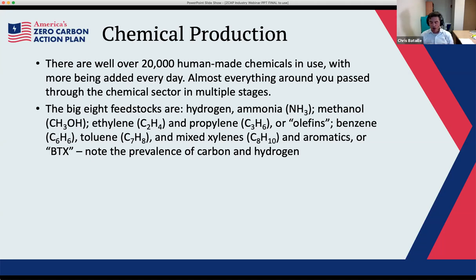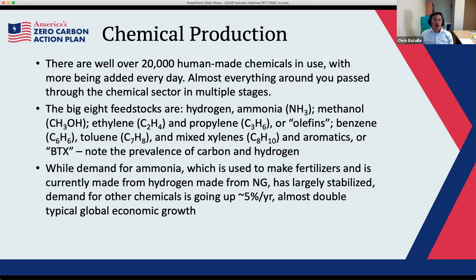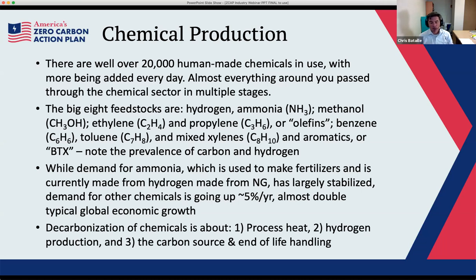Ammonia, used mainly for fertilizers, has largely leveled off in demand globally — we've reached the point of producing enough food as long as we can distribute it. But demand for other chemicals is growing about 5% per year, almost double typical economic growth, evident from the amount of plastics and other materials appearing around us. Decarbonization of these chemicals is about decarbonizing the process heat, cleaning up hydrogen production, finding another carbon source, and handling the end-of-life for that carbon.